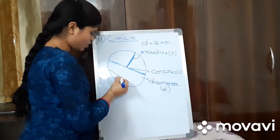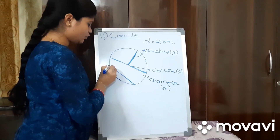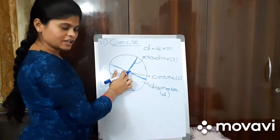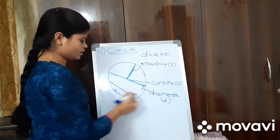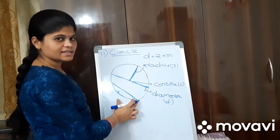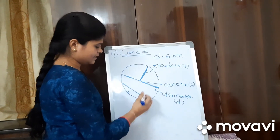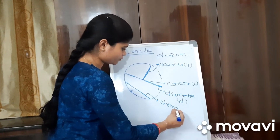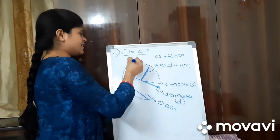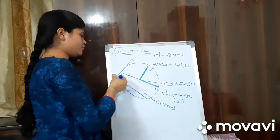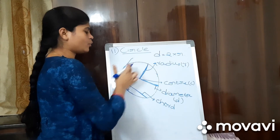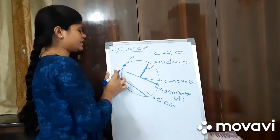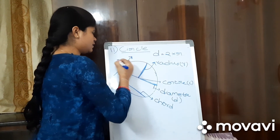Next is chord. A chord is a line joining two points on the circle but not passing through the center. If it passes through the center, it is called a diameter. A line joining two points on a circle and not passing through the center is called a chord. Next is tangent. A tangent is a line which touches the circle at only one point.